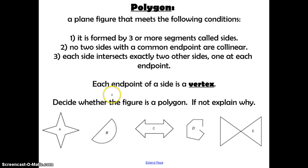A polygon is a plain figure that meets the following conditions. It's formed by three or more segments called sides. No two sides with a common endpoint are collinear. And each side intersects exactly two other sides, one at each endpoint.